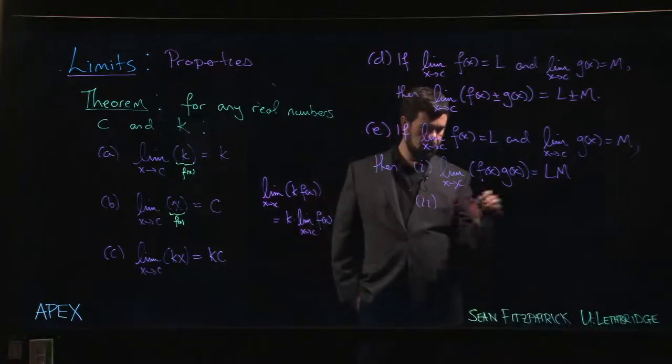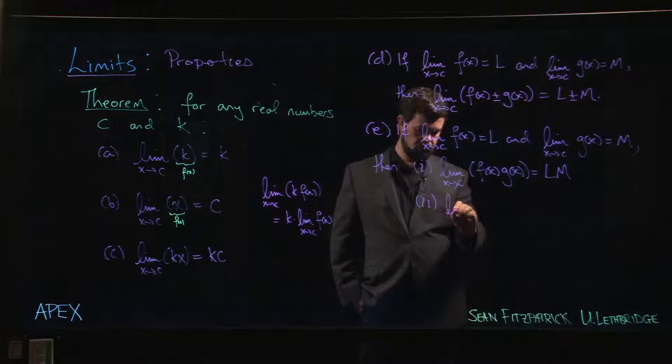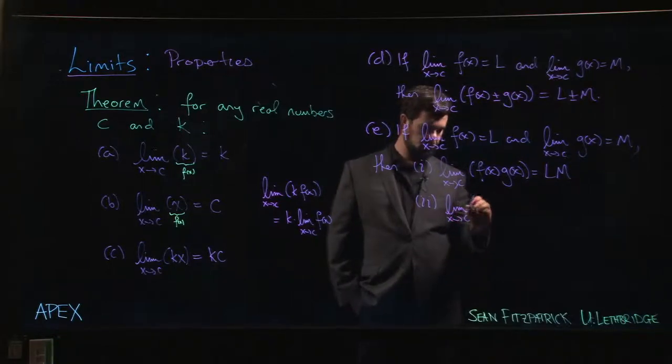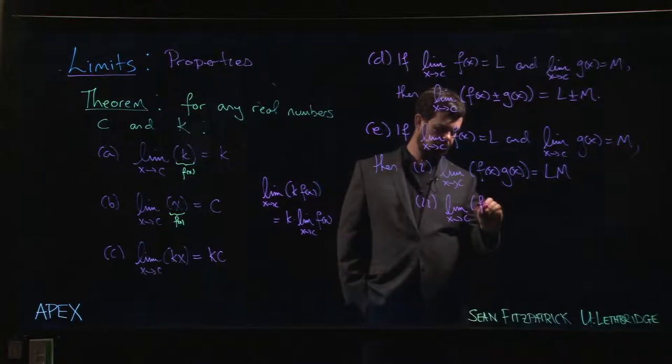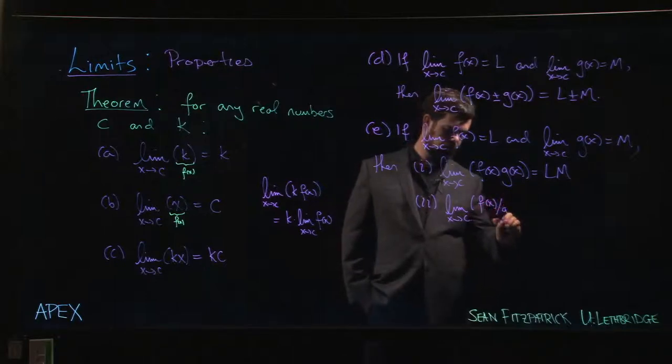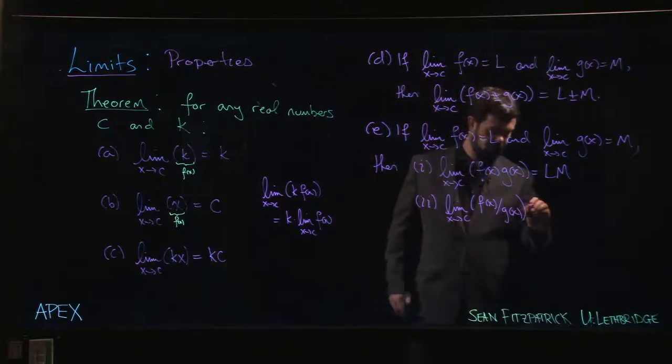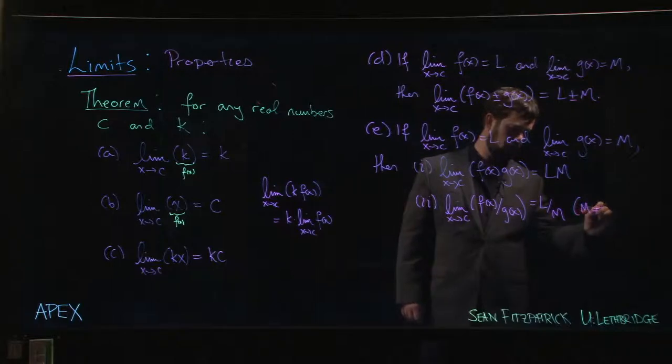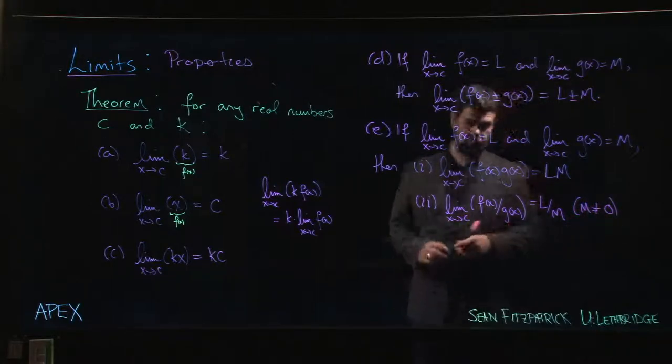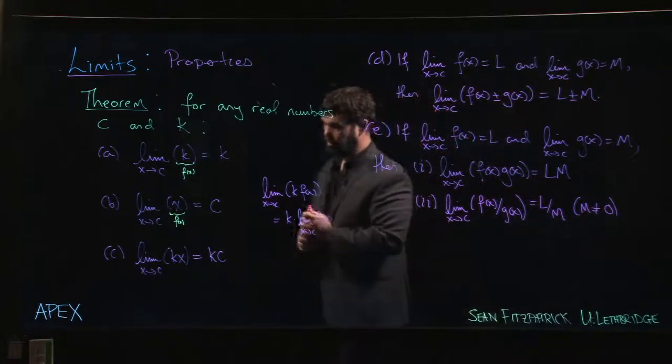One more, quotients. So if I have f of x over g of x, well that result is going to be L over M. But of course I need the restriction that M is not equal to zero.